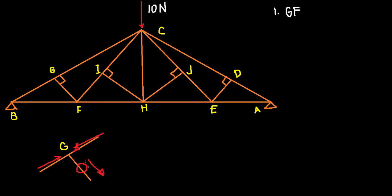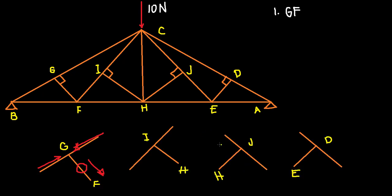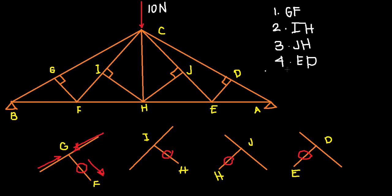This is similar to several other joints in the figure. We can see three other joints that look the same. At joint I, there's no loading either. Since none of these joints have external loading, by inspection we can identify the non-collinear members at each of these joints as zero force members.